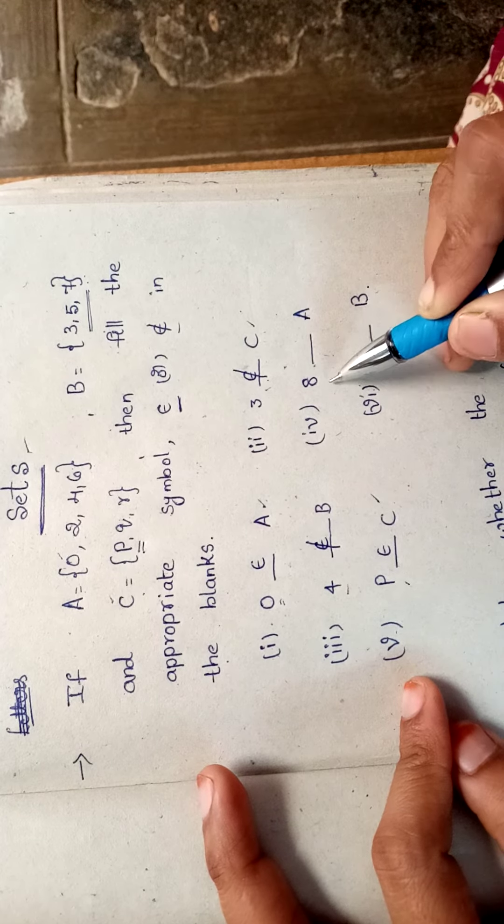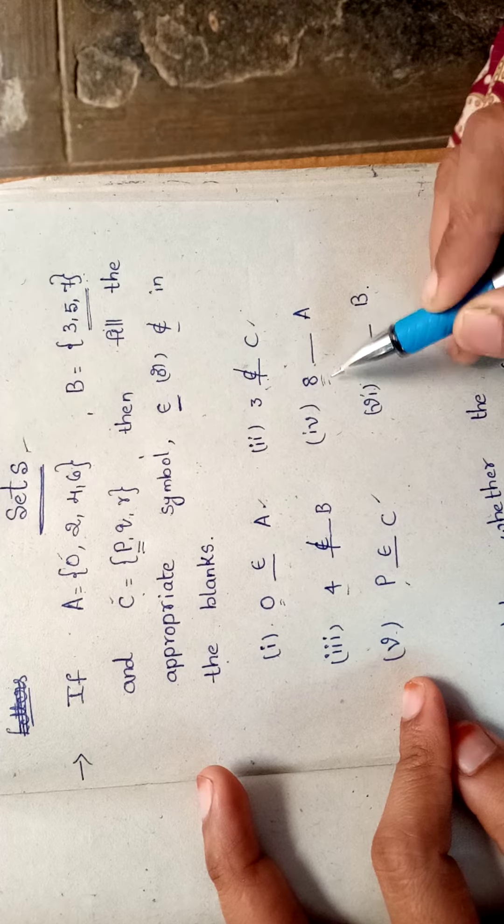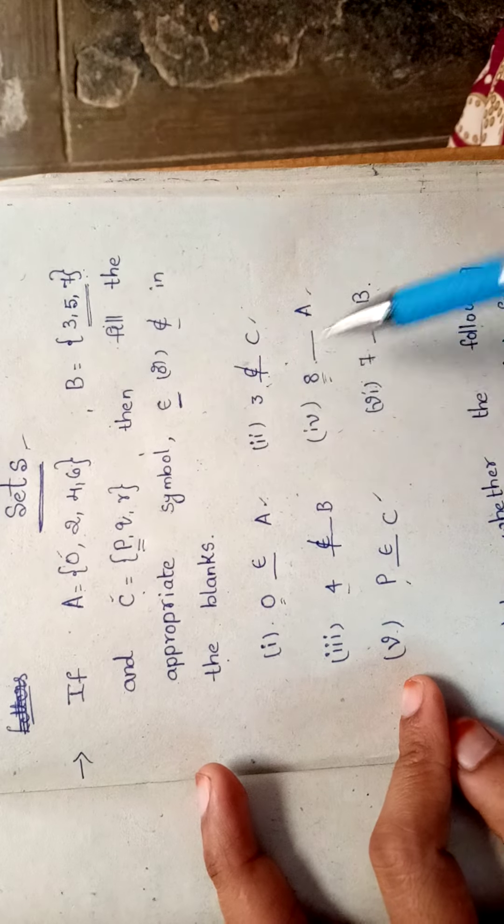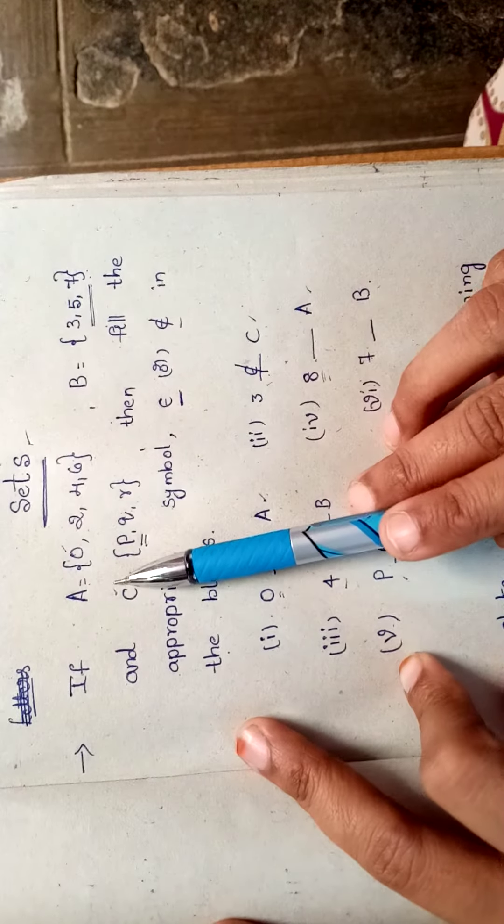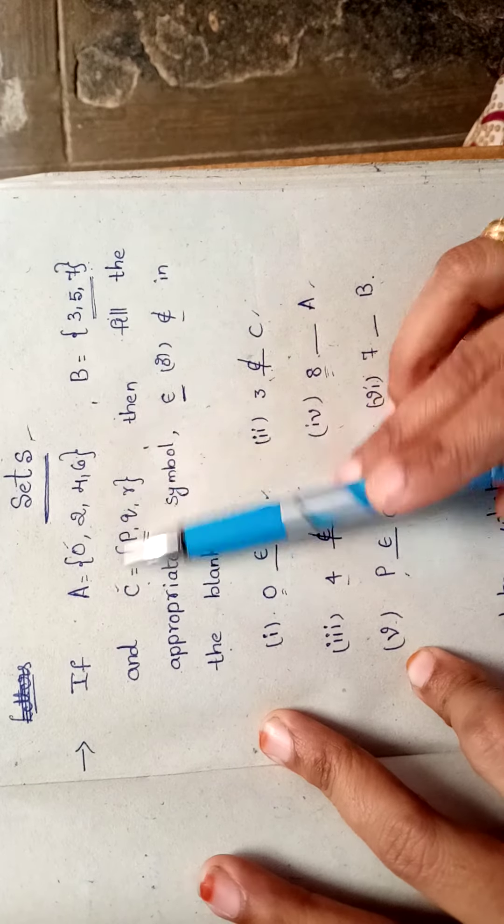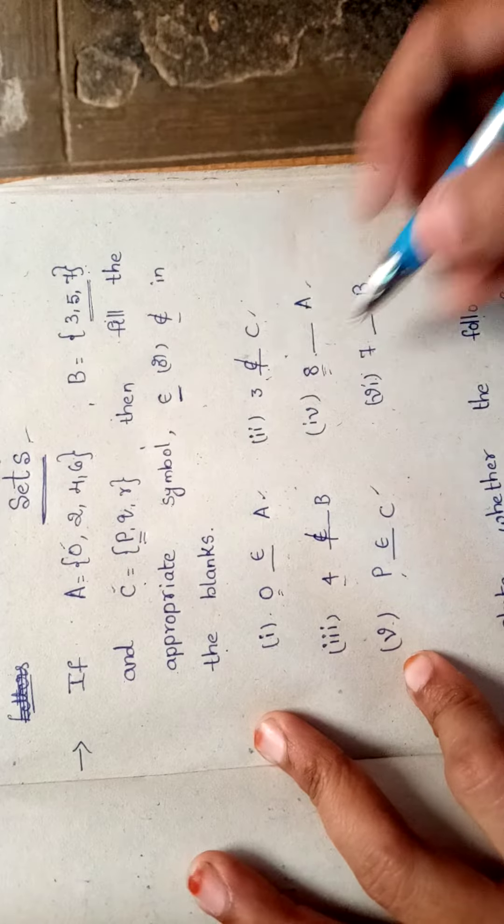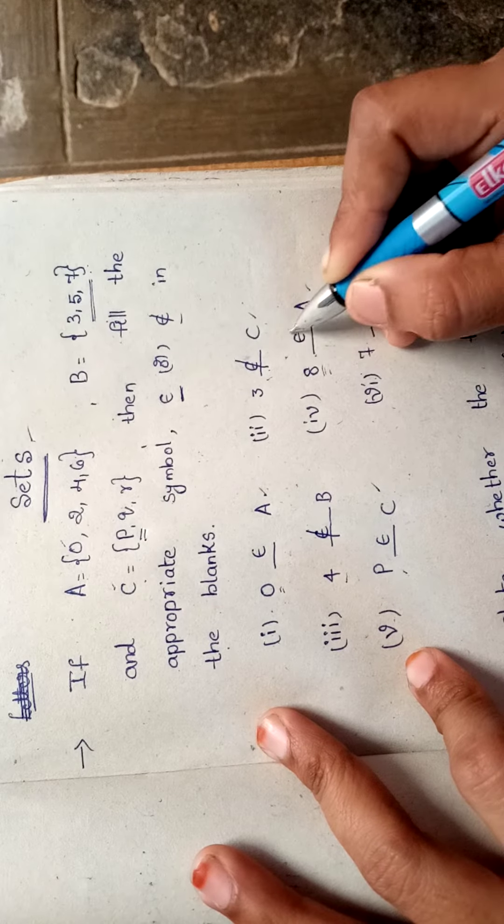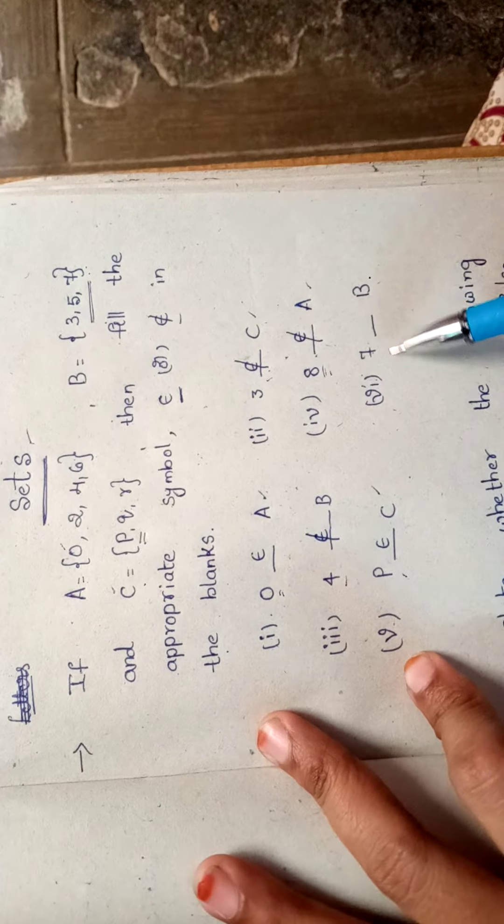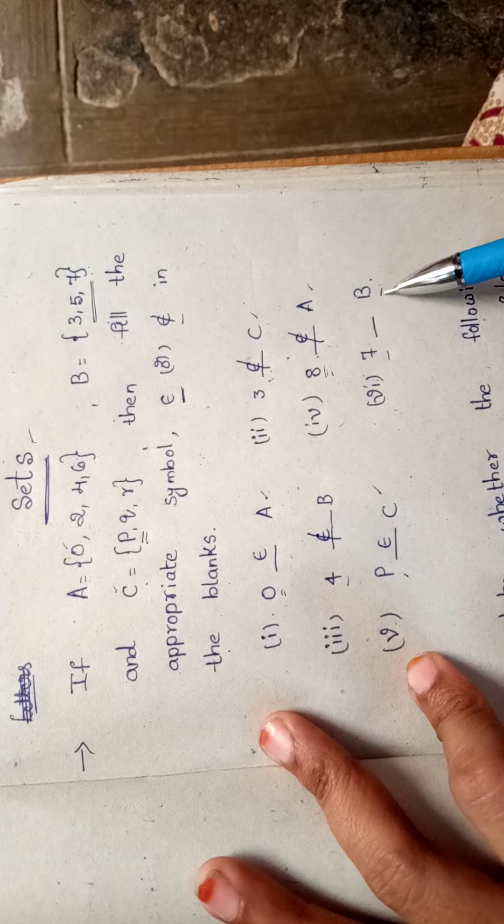Eight. Let us check if the element eight is in the set A or not. No, there is no element eight in the set A. We can write 'does not belong to.' Next, is seven in the set B or not?